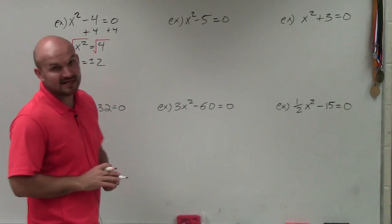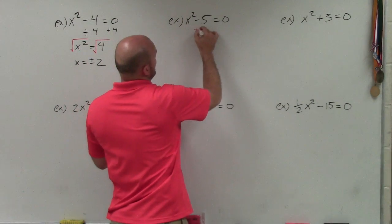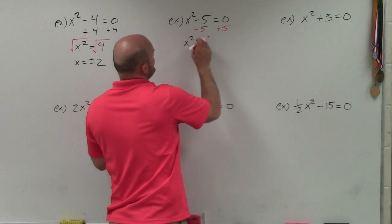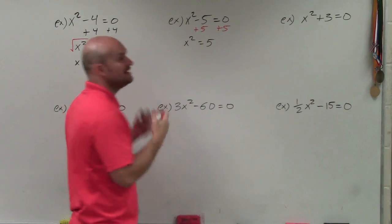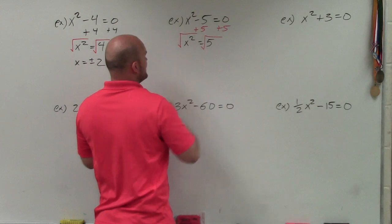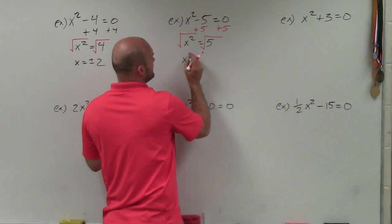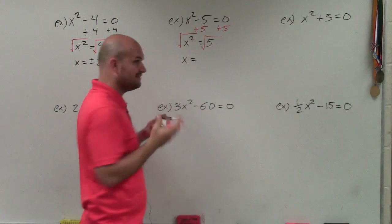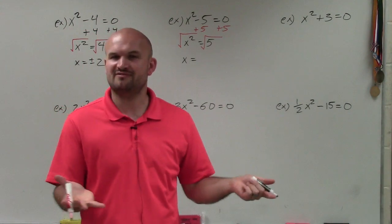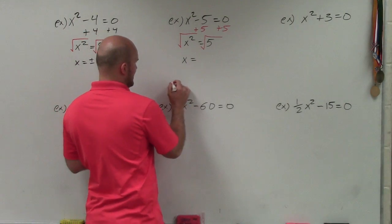In the next example, we have x squared minus 5 equals 0. Just like the first example, we're going to use our addition property of equality, so I'll have x squared is equal to 5. Again, to get the square root, I'm going to take the square root of both sides. Now we have an issue — the square root of 4 was plus or minus 2, but what's the square root of 5? Since we know the square root of 1 is 1, the square root of 4 is 2, and the square root of 9 is 3, the square root of 5 is going to be some decimal between 2 and 3.